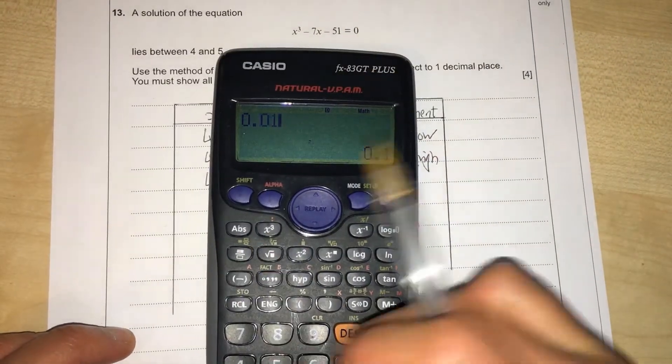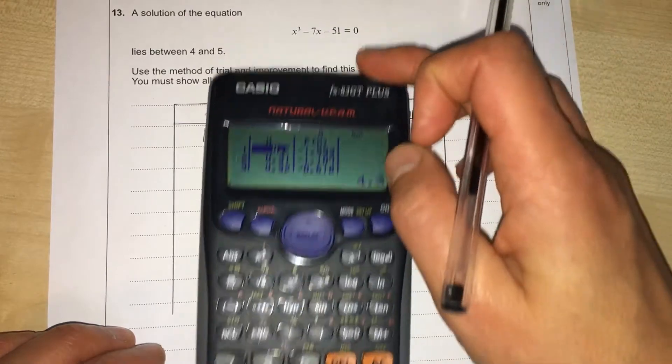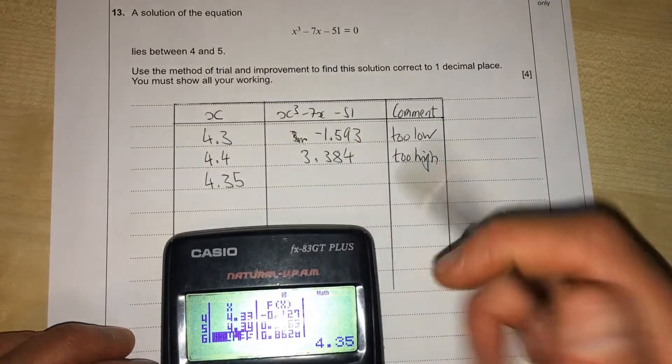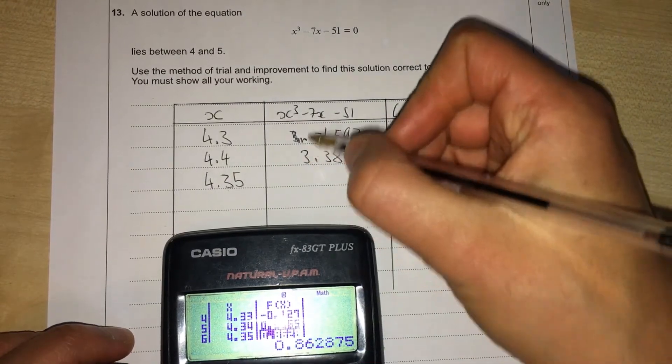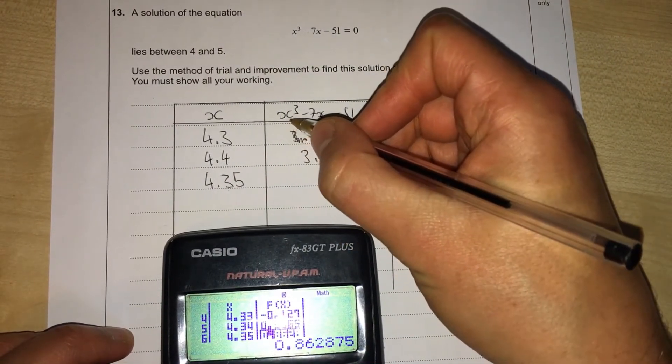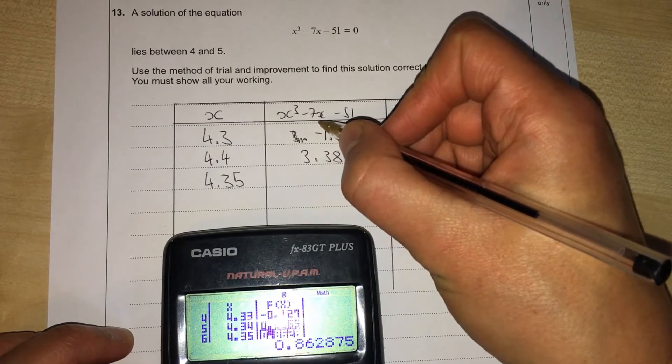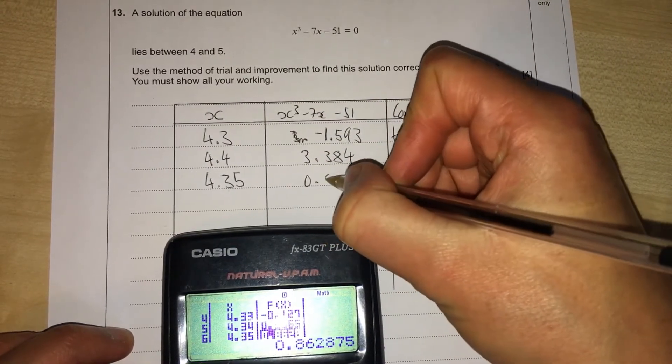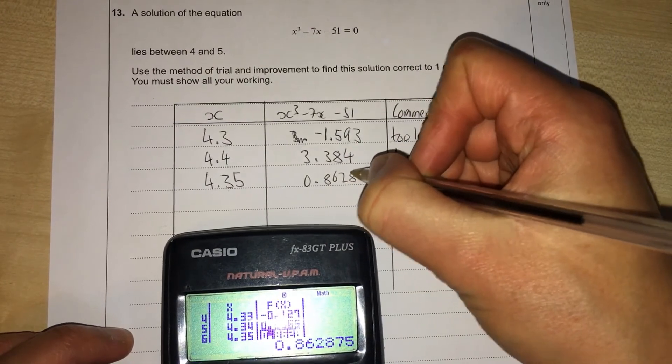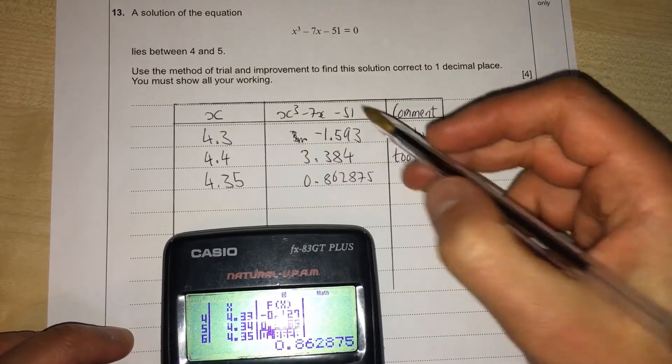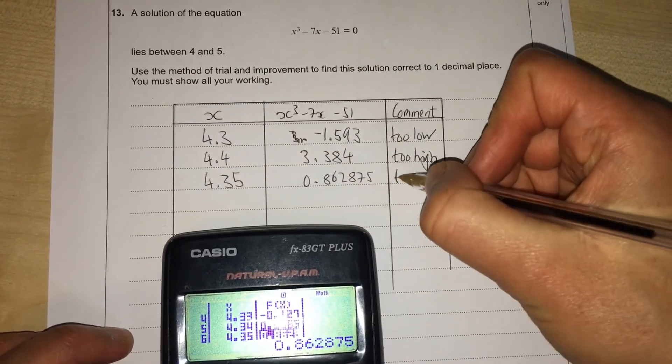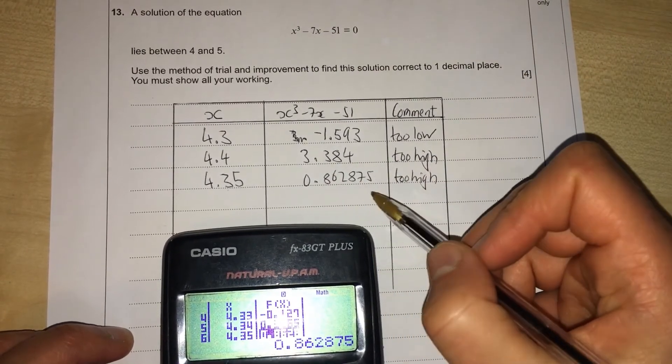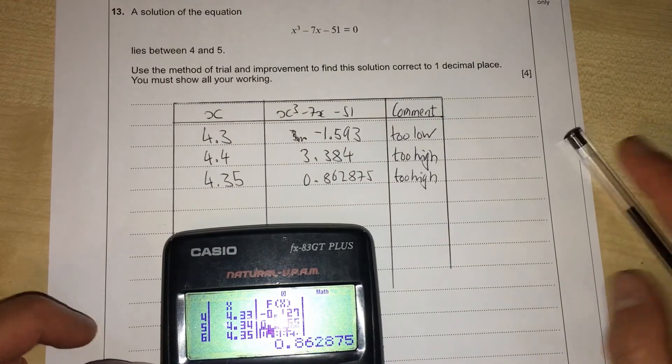In our table we're going to scroll down until we get to 4.35, and it tells us that the output is 4.35³ - 7 × 4.35 - 51 = 0.862875, which compared to 0 is too high. It's very close but it's not exactly zero.